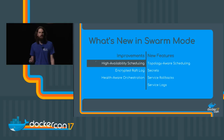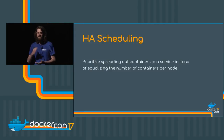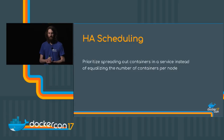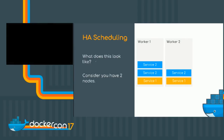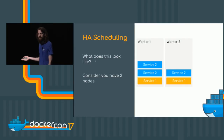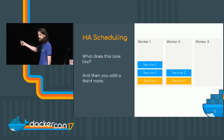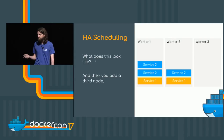Let's talk about high availability scheduling. In a sentence, this means we prioritize spreading out the containers in a service instead of trying to equalize the number of containers per node. To illustrate, we've got two workers already running some services. We add a third. We already have our desired state with the correct number of replicas, and just because we've added a new node and the workload is a little imbalanced, we're not going to reschedule anything. If it ain't broke, don't fix it.